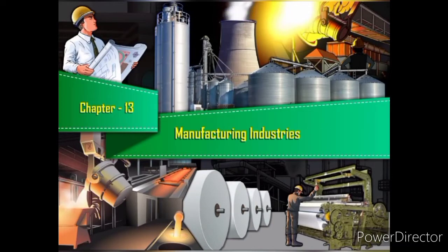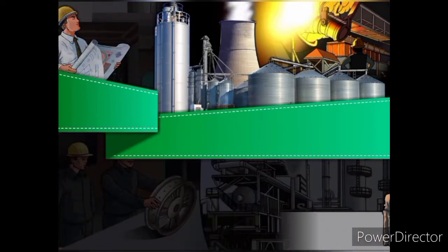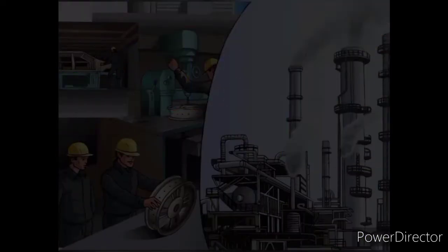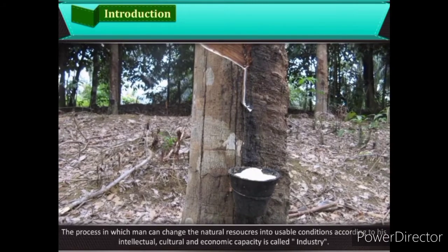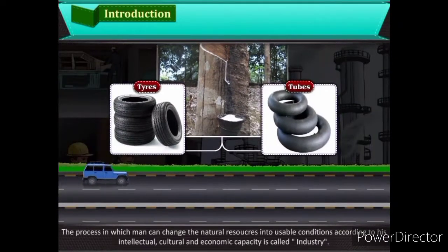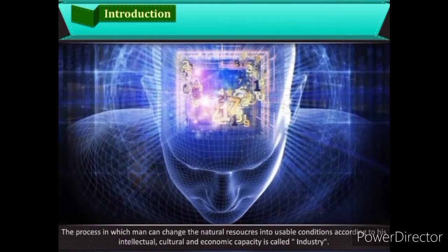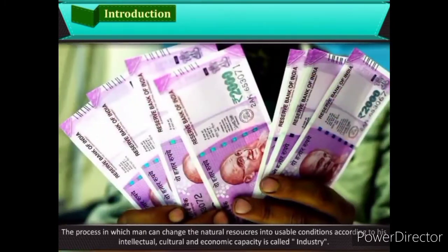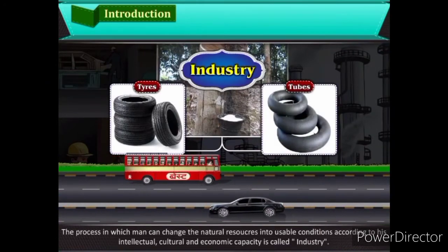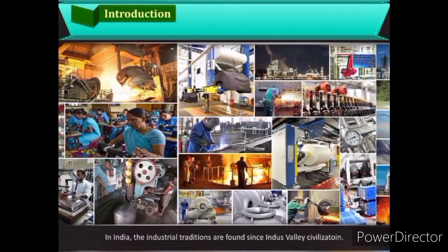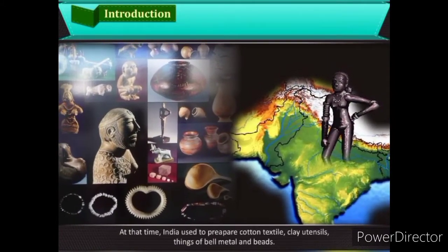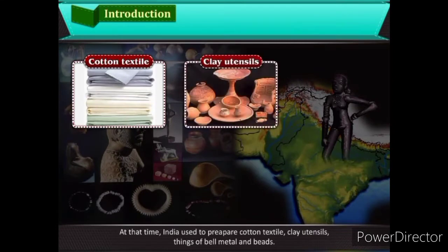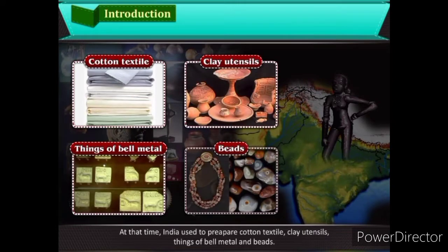Chapter 13: Manufacturing Industries. The process in which man can change the natural resources into usable conditions according to his intellectual, cultural and economic capacity is called industry. In India, the industrial traditions are found since Indus Valley civilization. At that time, India used to prepare cotton textile, clay utensils, things of bell metal and beads.